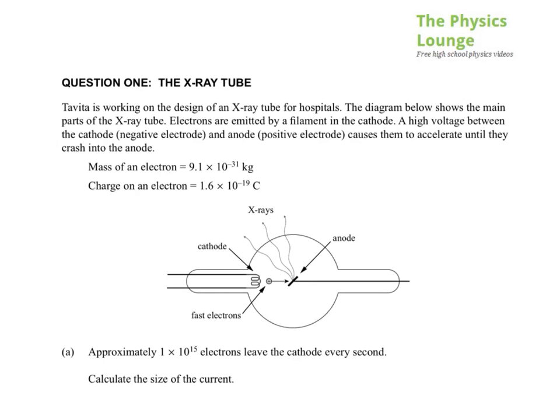The diagram below shows the main parts of the X-ray tube. Electrons are emitted by a filament in the cathode. Here's the cathode, filament in the cathode.